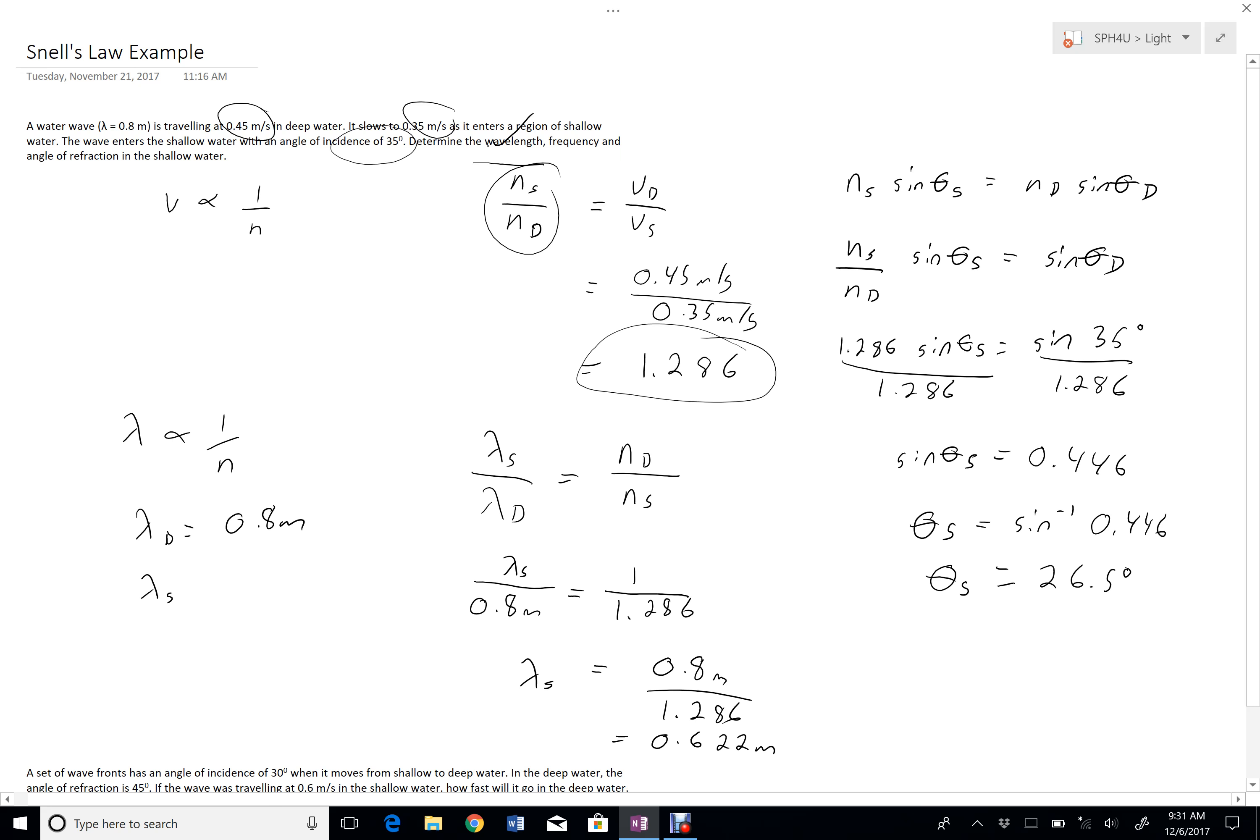0.446. And then I can take the inverse sine of both sides. So inverse sine that. And I get 26.5 degrees. Okay, so that's my angle of refraction and my wavelength in the shallow water.